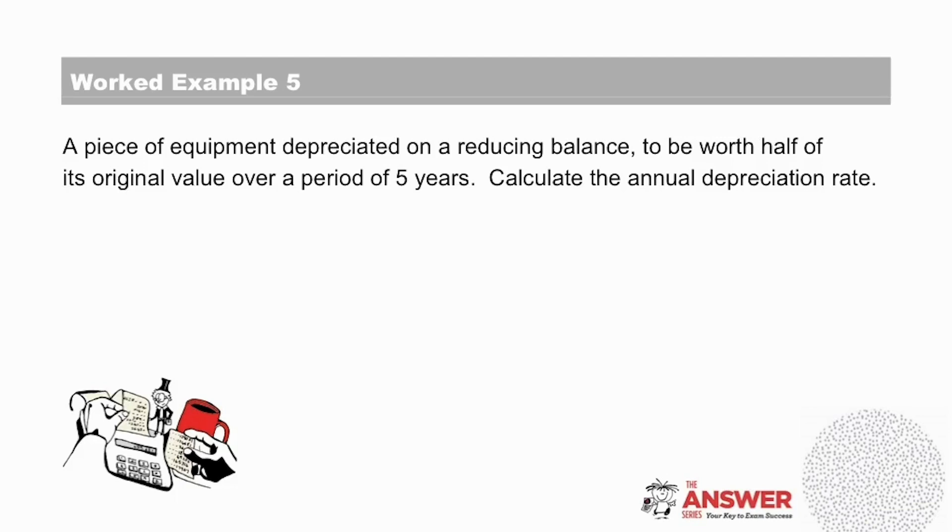So on the second read through, we can see that this time the equipment depreciates on a reducing balance, that it is worth half of its original value, and it is over a period of five years. Then lastly, we need to calculate the annual depreciation rate. Take a moment now to look at which formula to use, which variables you have been given, and what you have been asked to calculate. And then pause the video to give yourself time to try this question on your own.